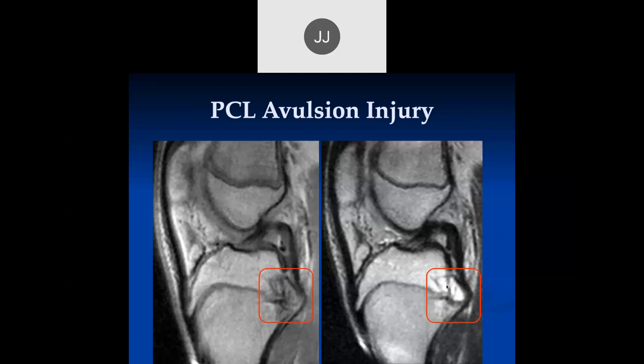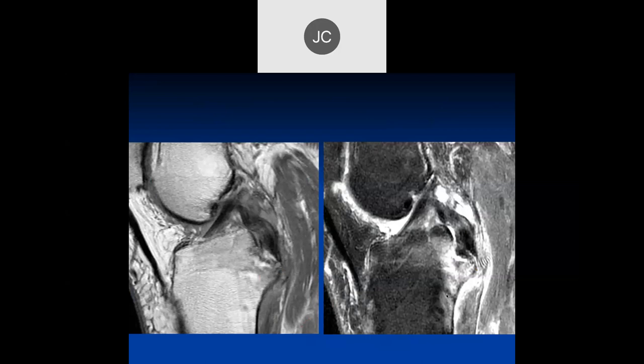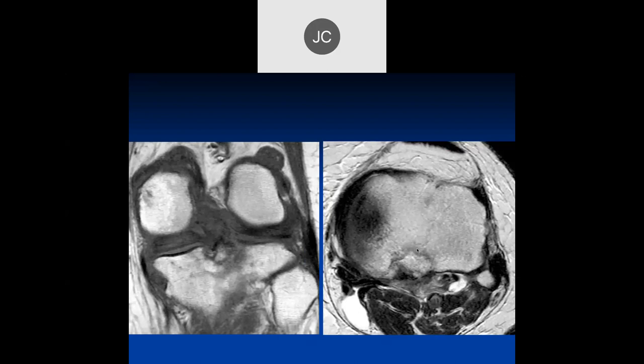I don't see blood, though. You see a lot of edema in the bone - I'm talking about edema outside the bone. We have two sagittals showing another avulsion of the distal attachment of the PCL with edema. This is an adult rather than a teenager. Here you can see that avulsed fragment back here where the PCL attaches.